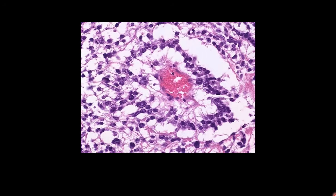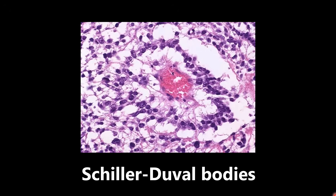This next image is an example of Schiller-Duval bodies. These are glomerulus-like structures seen in yolk sac tumors, also called endodermal sinus tumors. If you look at this by itself, it kind of resembles a glomerulus — clearly not the same structure, but it has that same basic shape. So if you see something like that in a question, you want to be thinking about Schiller-Duval bodies and yolk sac tumors.